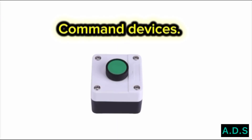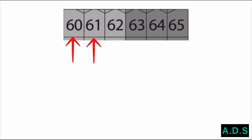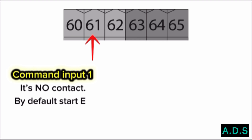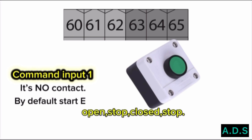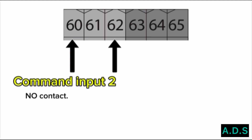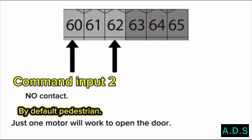Command devices. Terminal 61 and terminal 60 — command input 1. It is an NO contact, by default configured as start. Terminal 61 is the start pin; terminal 60 is the common pin for terminal 61. By switch, the sequence is: open, stop, closed, stop. Terminal 62 with common terminal 60 — command input 2. It is an NO contact, by default configured as pedestrian, meaning just one motor will work to open the door.